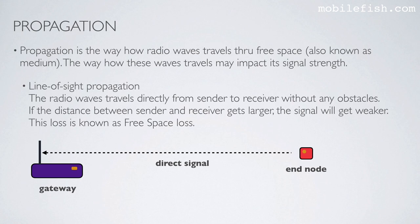Line of sight propagation: the radio waves travel directly from sender to receiver without any obstacles — from end node to gateway there are no obstacles. If the distance between sender and receiver gets larger, the signal gets weaker. This loss is known as free space loss.